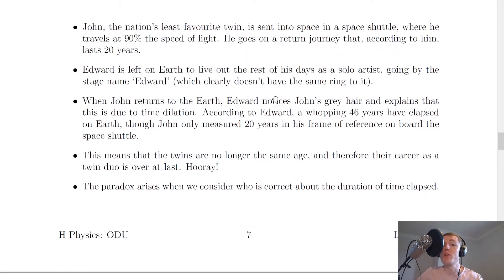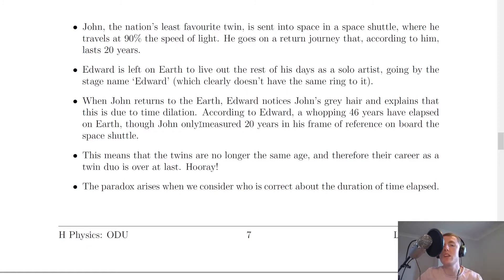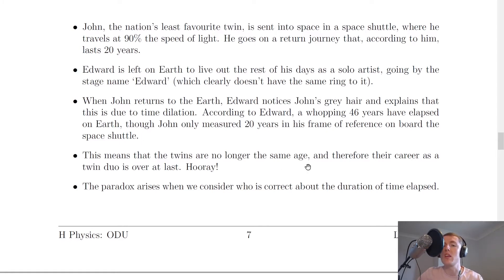Edward is left on Earth to live out the rest of his days as a solo artist going by the stage name Edward, which clearly doesn't have the same ring to it. When John returns to the Earth, Edward notices John's grey hair and explains that this is due to time dilation. According to Edward, a whopping 46 years have elapsed on Earth, though John only measured 20 years in his frame of reference on board the space shuttle. This means that the twins are no longer the same age and therefore their career as a twin duo is over at last. Hooray!